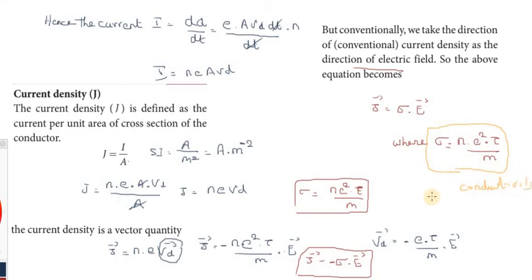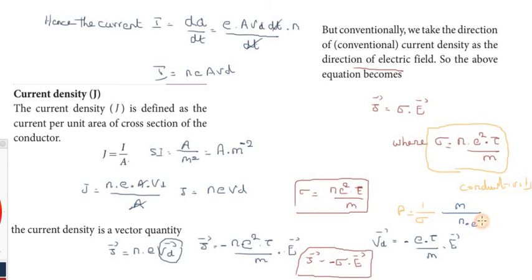The reciprocal of conductivity is resistivity. So rho equals 1 by sigma, which equals m divided by n into e squared into tau. This is the result for resistivity — the reciprocal of conductivity.